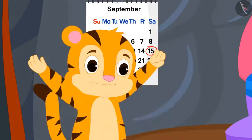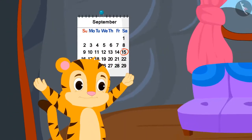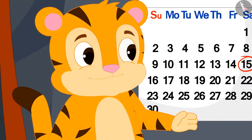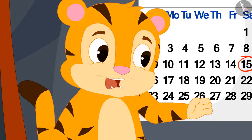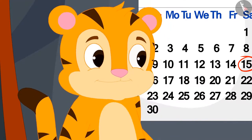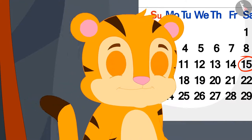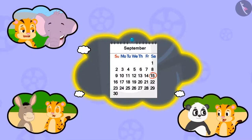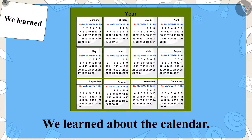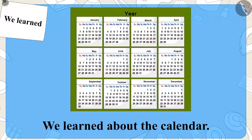Sher Khan was very happy after learning about the calendar. He told his mother that now he himself will find the right day for the magic show. He went running and told his friends about the calendar. Children, in this video we learned about the calendar. In the next video, we will learn more about it with some interesting examples.